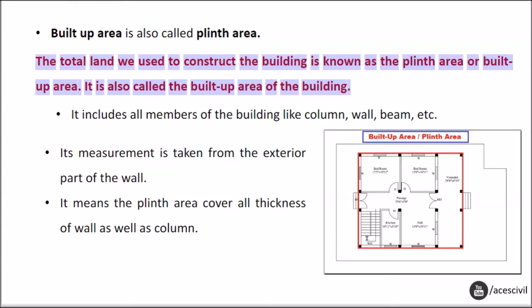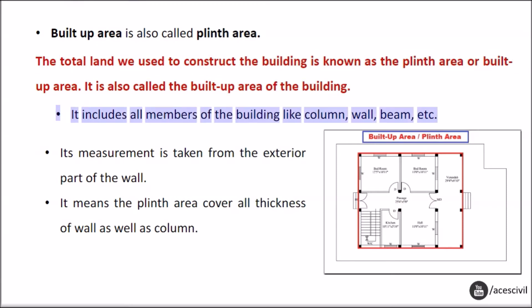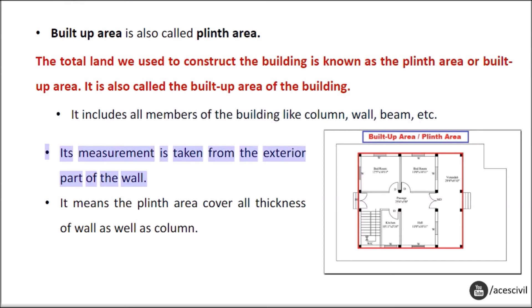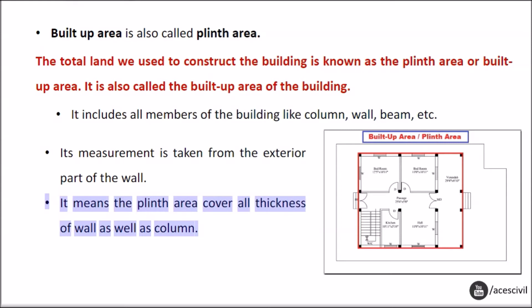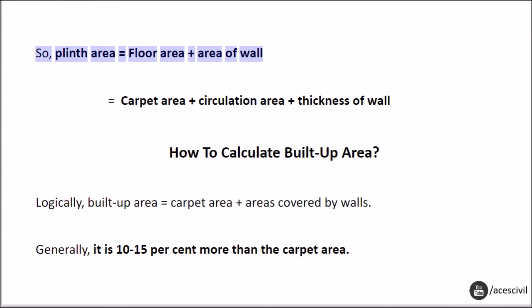The total land used to construct the building is known as the plinth area or built-up area. It includes all members of the building like column, wall, beam, etc. Its measurement is taken from the exterior part of the wall. It means the plinth area covers all thickness of wall as well as column. So, plinth area equals floor area plus area of wall, which equals carpet area plus circulation area plus thickness of wall.